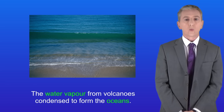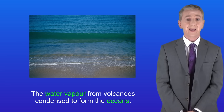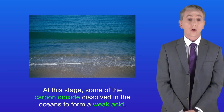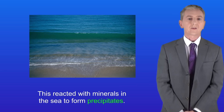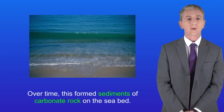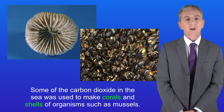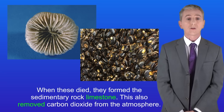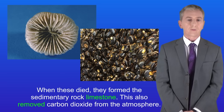As the water vapor from volcanoes condensed to form the oceans, some of the carbon dioxide dissolved in the oceans to form a weak acid. This reacted with minerals in the sea to form precipitates, and over time this formed sediments of carbonate rock on the seabed. Some of the carbon dioxide in the sea was also used to make corals and shells of organisms such as mussels, and when these died they formed the sedimentary rock limestone — so this also removed carbon dioxide from the atmosphere.